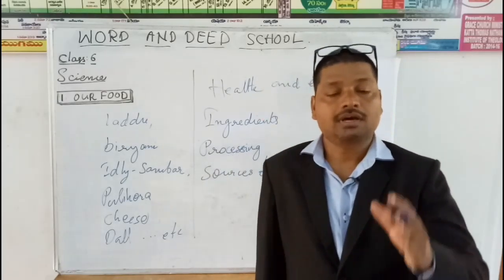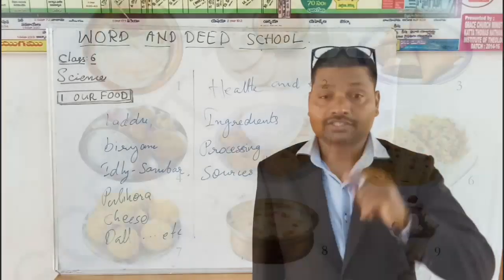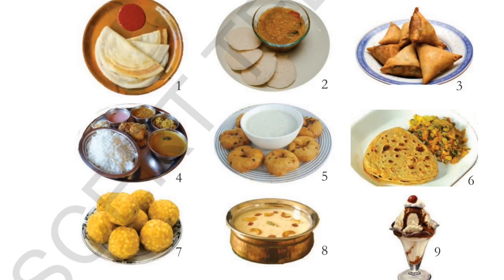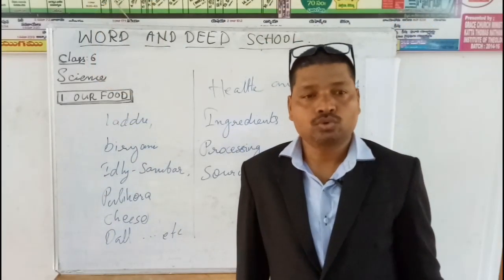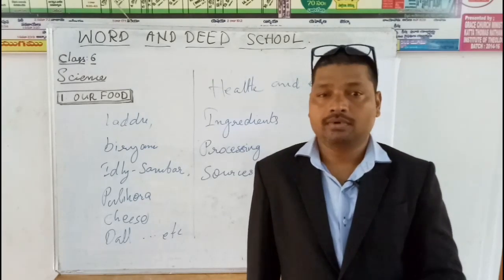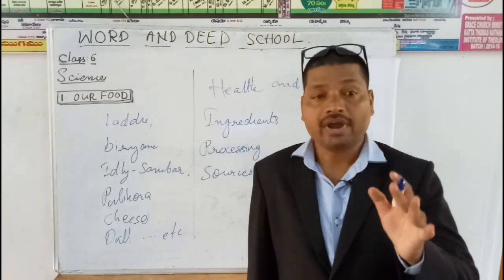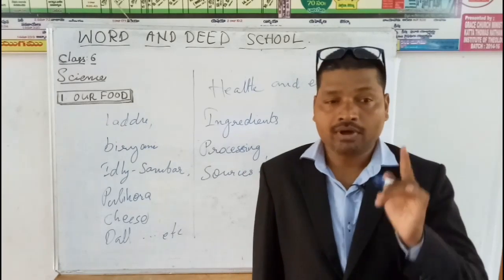Now, observe the food item pictures displayed on the screen. Pause the video and observe the pictures displayed on the screen carefully. Now, let us do an activity: Finding Variety in Our Food.